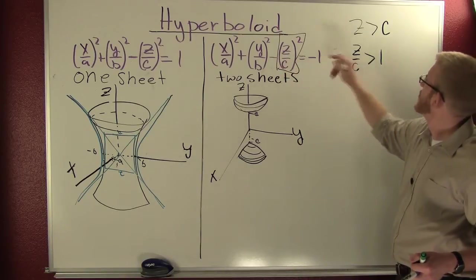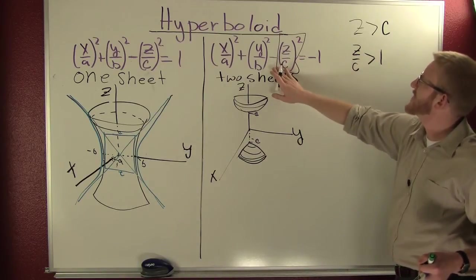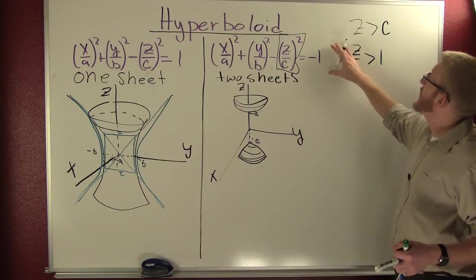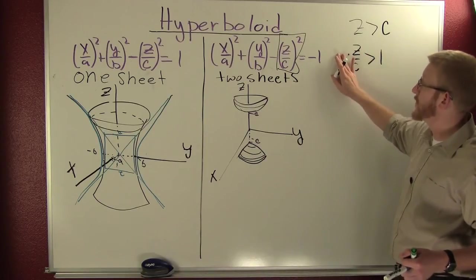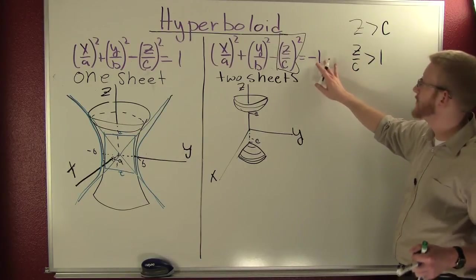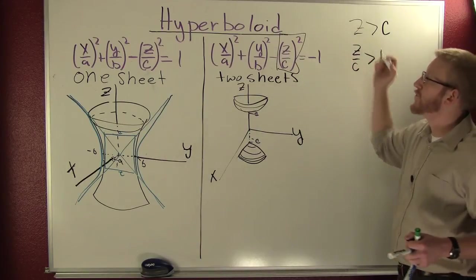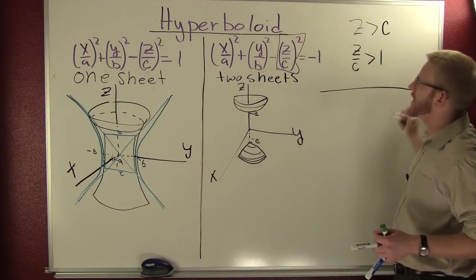I get a real ellipse. If this is bigger than one, we have to add it to both sides. Then it's going to be Z over C, which would be a positive number on this side, is going to be bigger than that guy, giving you real ellipses.